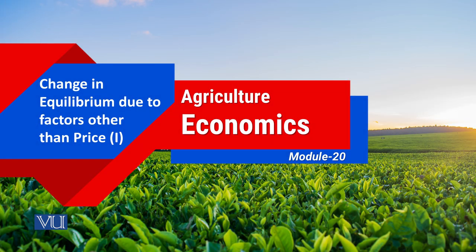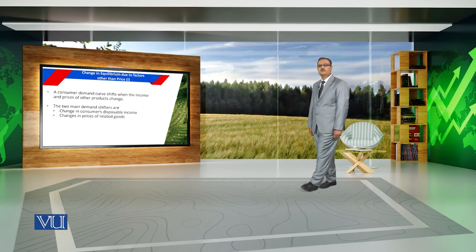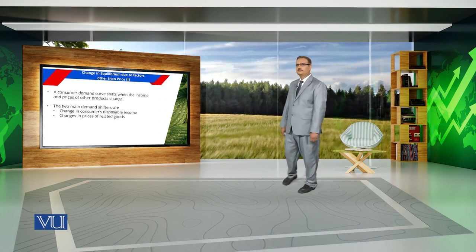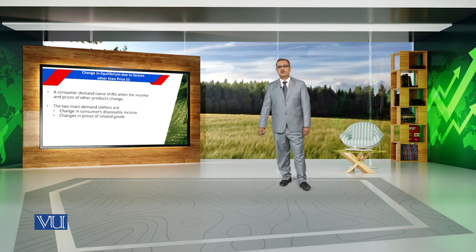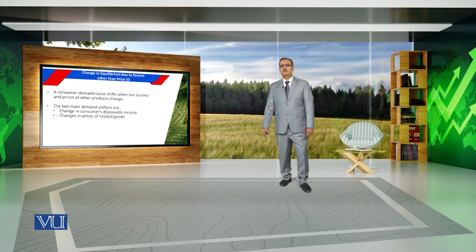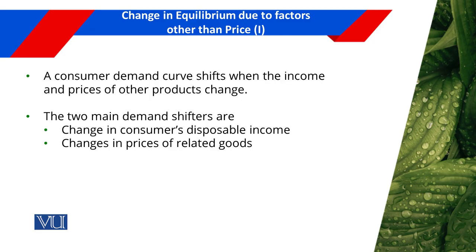Module 20: Change in equilibrium due to factors other than price. Earlier we made a discussion about change in equilibrium because of change in price of one commodity. In the last module, we discussed the impact of change in price of apples on the consumer's equilibrium. But consumer's equilibrium will also change if there is change in factors other than price.